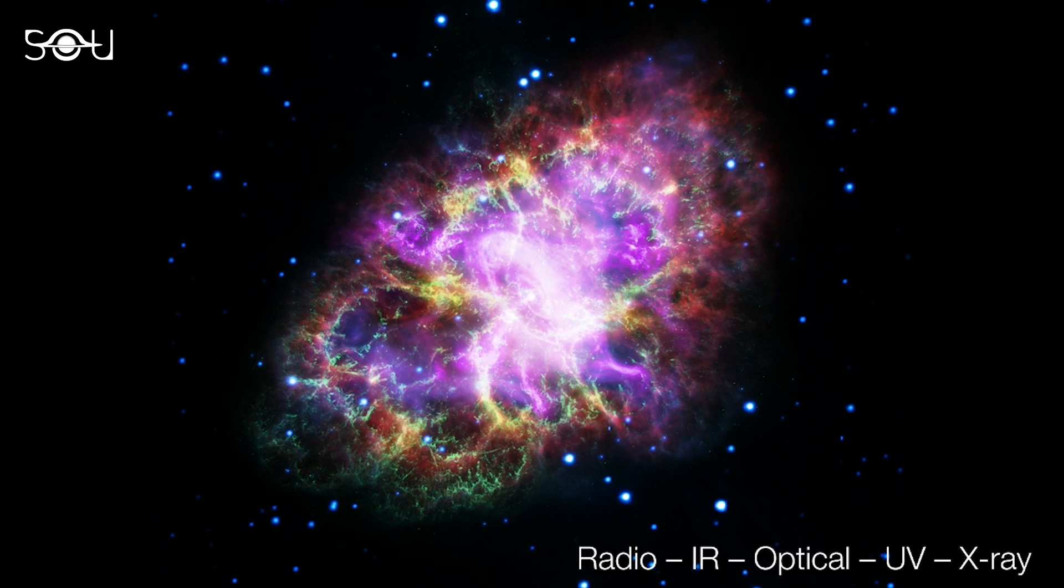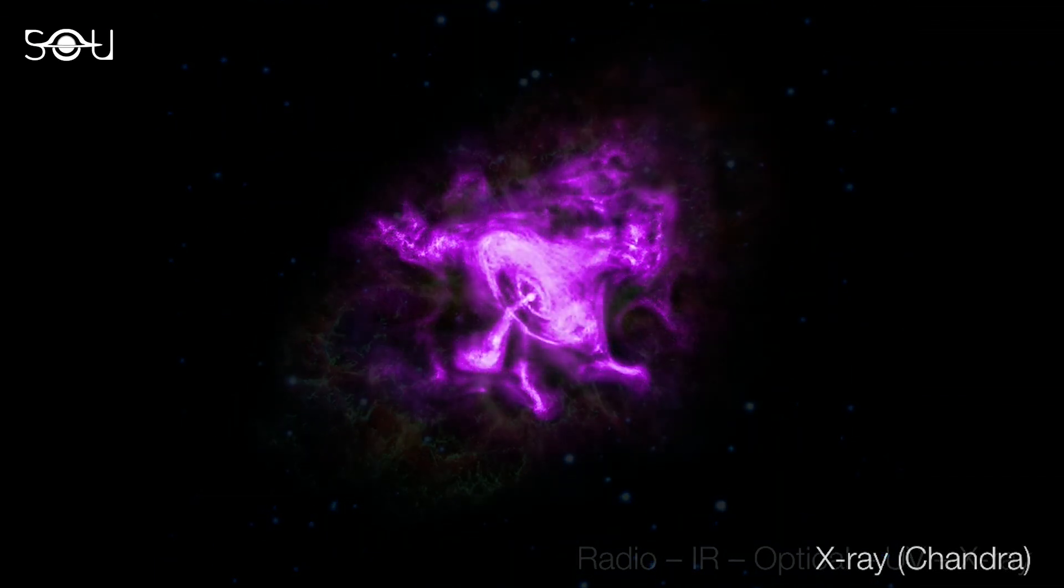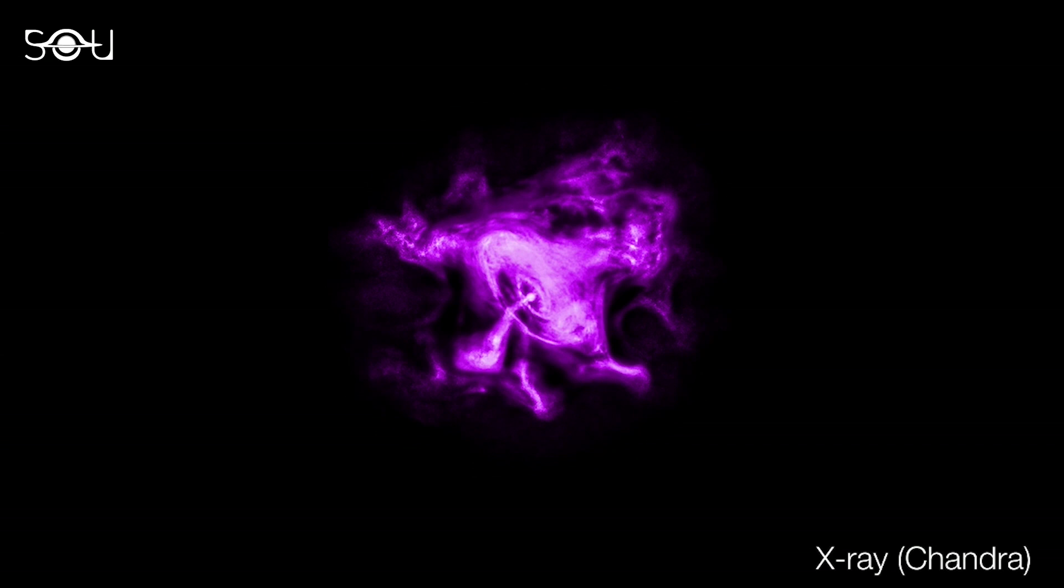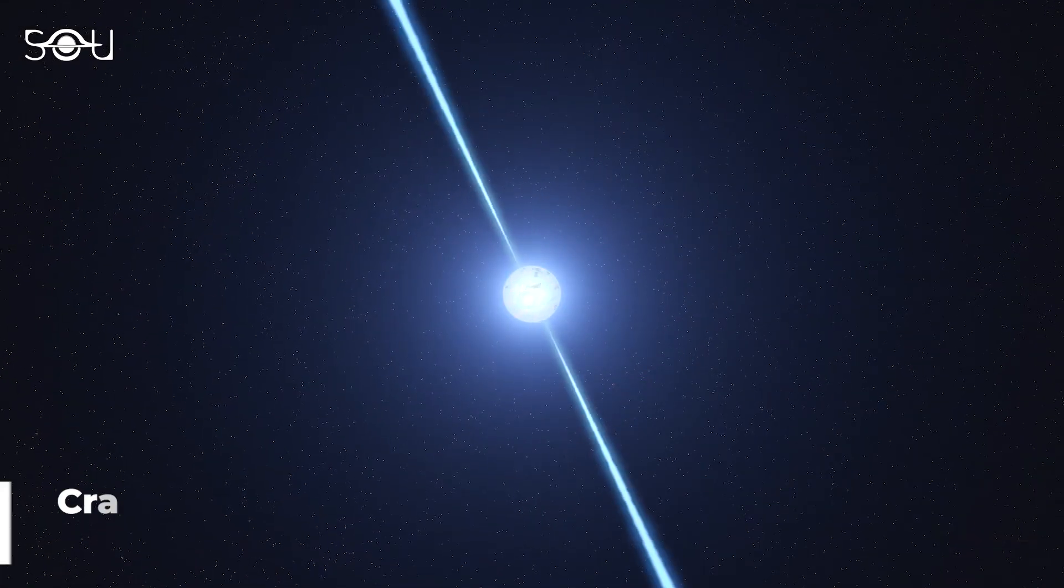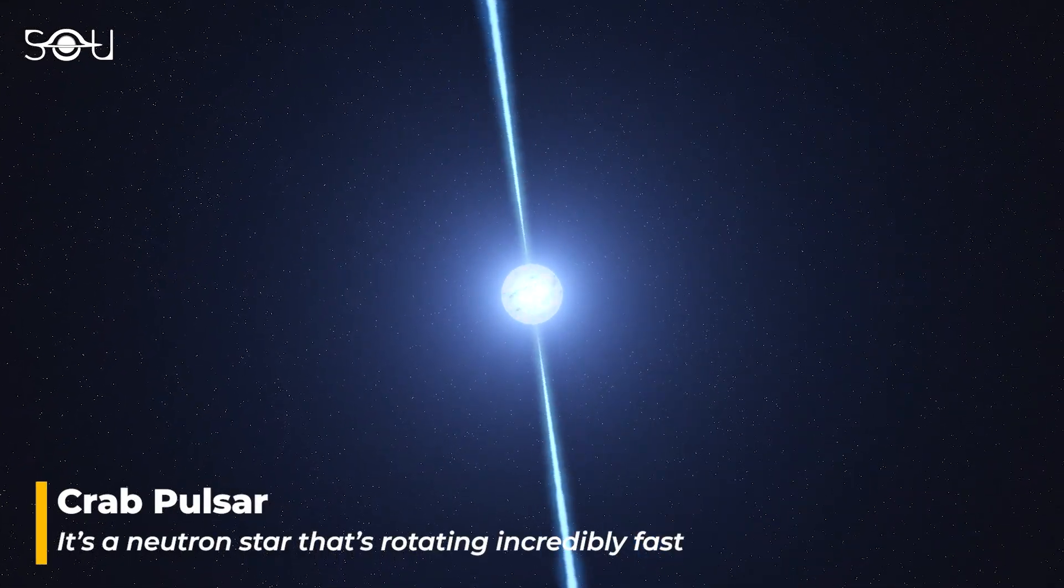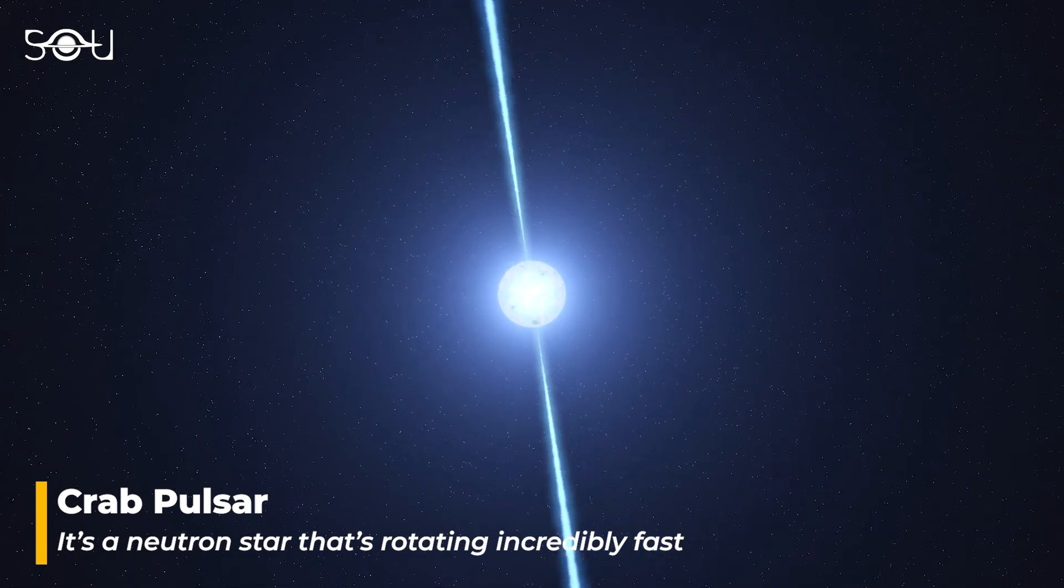The reason why the Crab Nebula is so important for astronomers is because of what lies at its center. At its heart resides the Crab Pulsar, a neutron star that rotates at an impressive rate of 30.2 times per second.